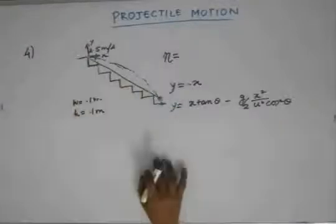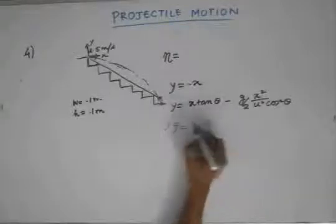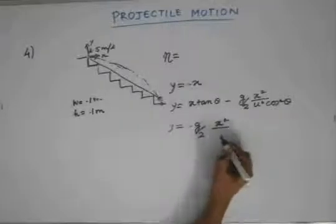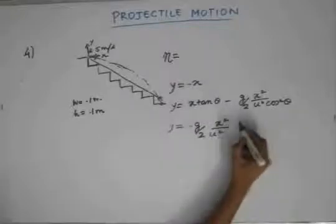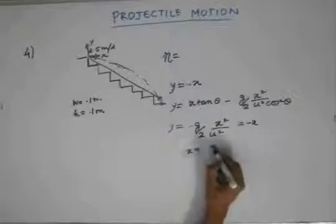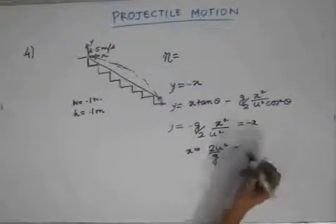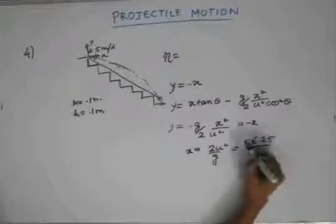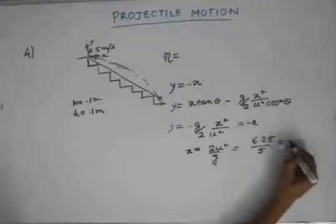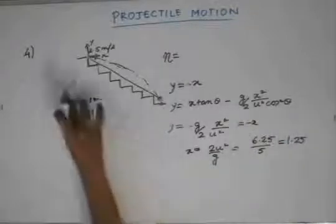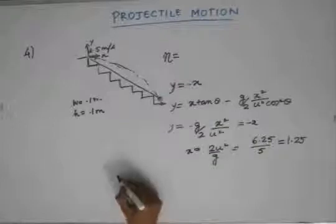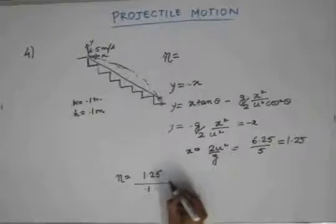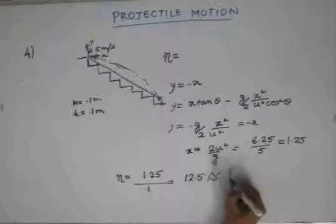Since the particle is projected horizontally, θ = 0, so the equation simplifies to y = −gx²/(2u²). Setting this equal to −x gives x = 2u²/g. With u = 2.5 m/s, u² = 6.25, so x = 2 × 6.25 / 10 = 1.25 meters. Dividing by the stair width of 0.1 m gives 12.5, so the particle covers approximately 13 steps.